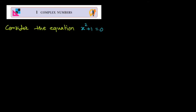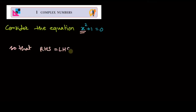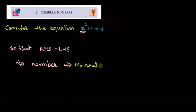To understand the concept, let us consider a simple equation: x² + 1 = 0. We will find the value of x such that the right hand side equals the left hand side. If you search the numbers, you will find that no such real number exists.